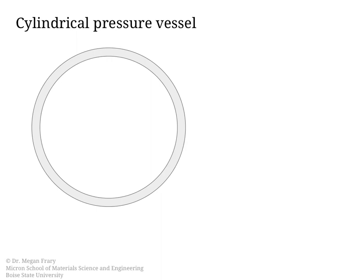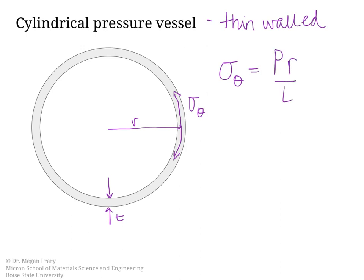We will consider now a cylindrical pressure vessel, which is thin-walled. So the wall thickness is small relative to the radius. I've drawn it to the middle here. This is the mean radius of this cylinder. We have the thickness of the wall, and the hoop stress is operating in this direction. For a thin-walled cylindrical pressure vessel, the hoop stress is simply equal to P the internal pressure times R divided by T, the thickness.